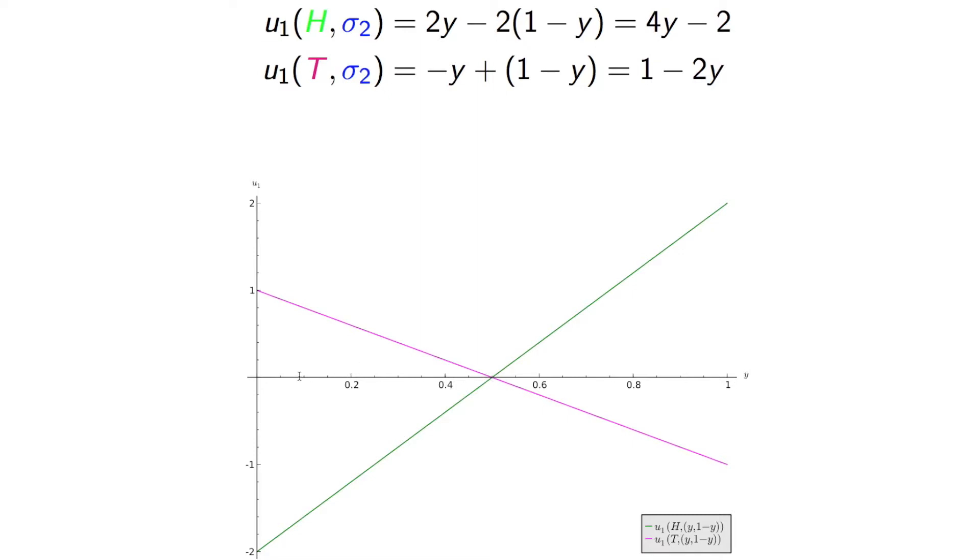then the best response for player 1 is to choose tails. So anything down here, player 1 should play tails. And everything here, player 1 should play heads. In other words, those are the best responses. If y is equal to a half, then player 1 is indifferent.